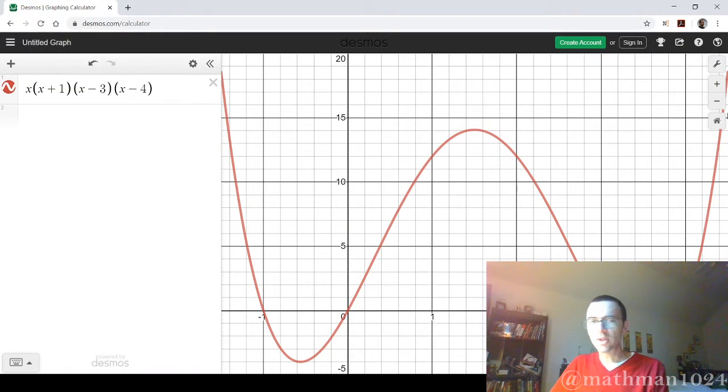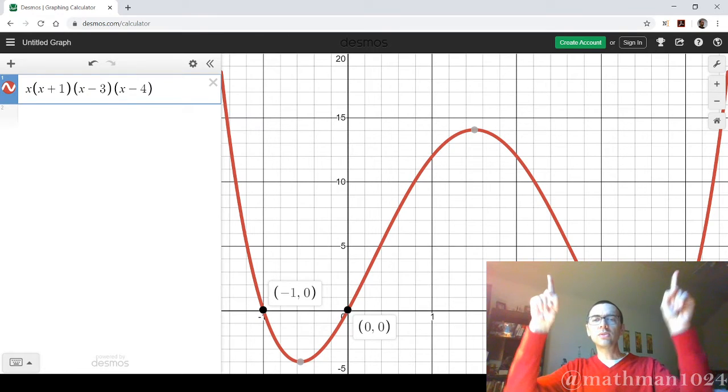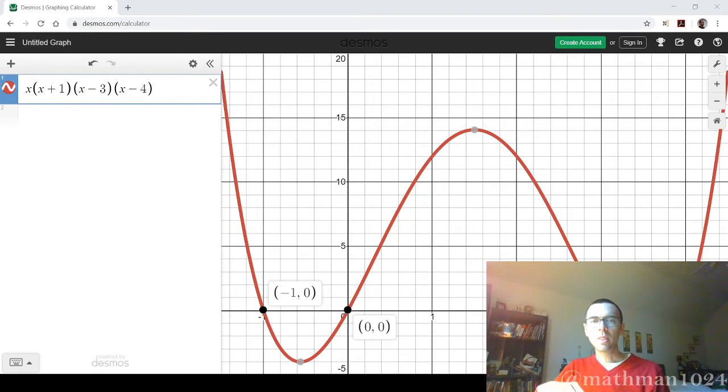So here in Desmos, you can see that it looks very much like the picture that we have. You see that he is crossing right here, negative one, zero, three, and four. You have all of your x-intercepts listed. You see that the end behavior also matches up. He is going up on the ends, and you see you've got three turning points, right?